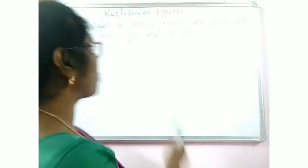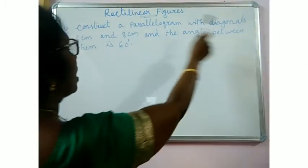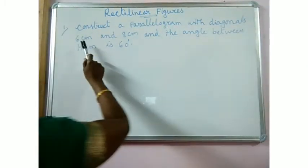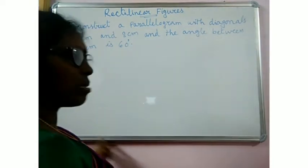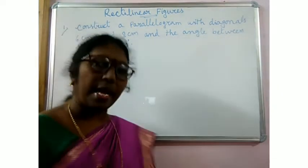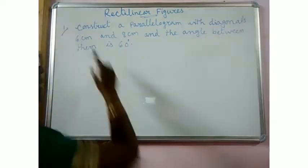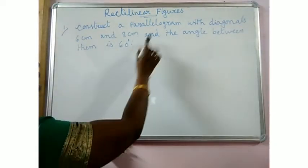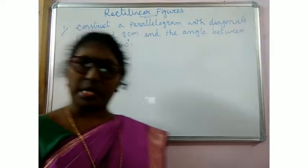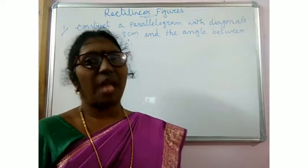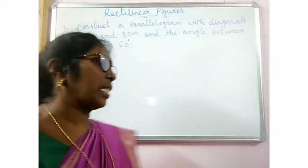The first one is: construct a parallelogram with diagonals 6cm and 8cm. That means the two diagonals of the parallelogram are 6cm and 8cm, and the angle between them is given as 60 degrees.